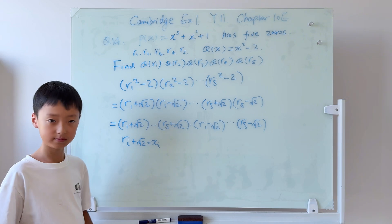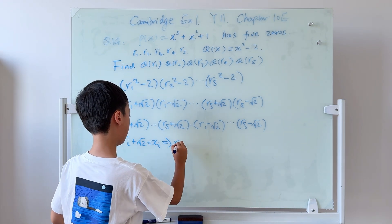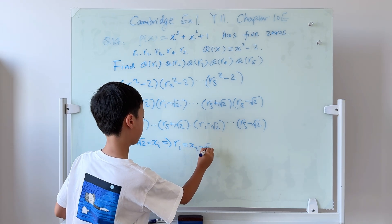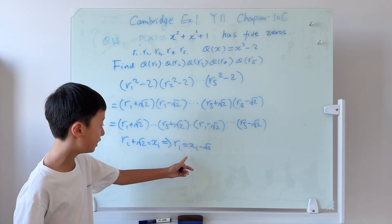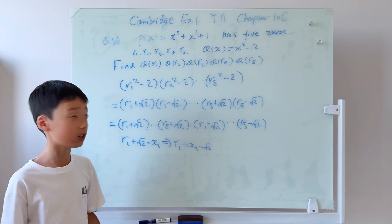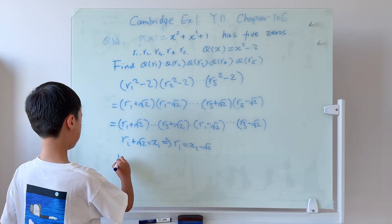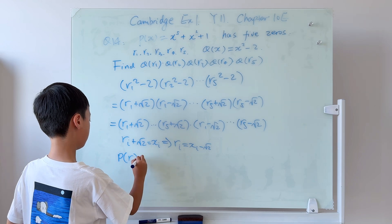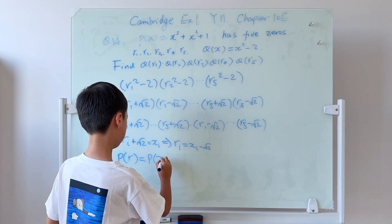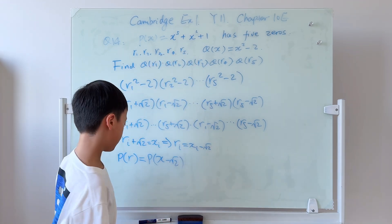So we know that ri equals xi minus square root of 2. Now this is just another form of r and it's still a root. So what do we do? We can substitute that in. So p(r) equals p of this, which will equal to just substitute this into all of the x's.